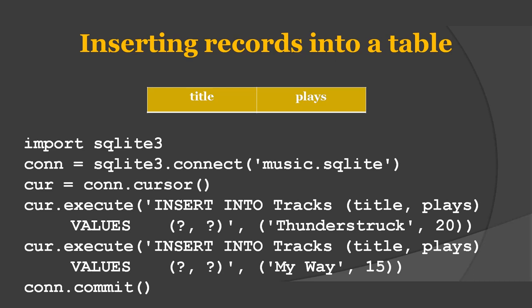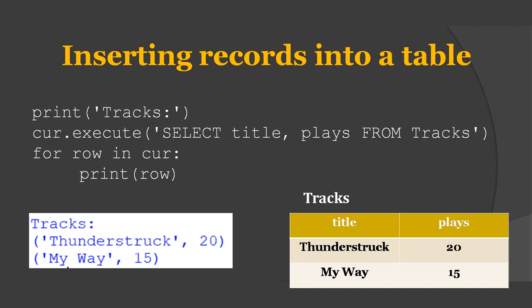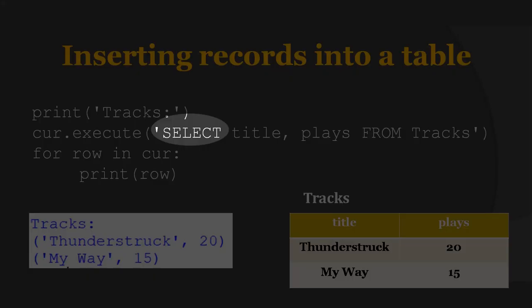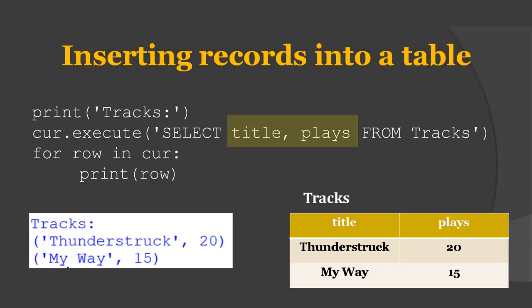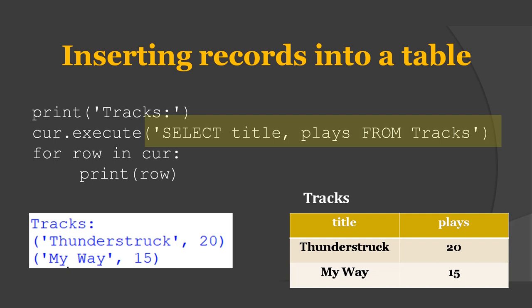With this, we have successfully inserted two records into the table named tracks. Next step is to visualize the data, and so for that we have the SELECT command. We use the SELECT command to retrieve the rows we just inserted into the table. On the SELECT command we indicate which columns we would like to display — like title and place in this case — and indicate which table we want to retrieve the data from, which is the table called tracks. The syntax is: SELECT title, place FROM tracks — where title and place are the names of columns and tracks is the name of the table.